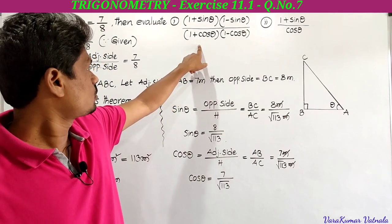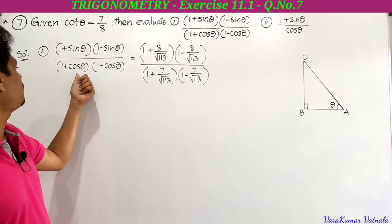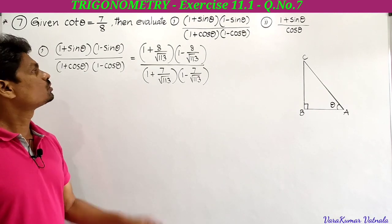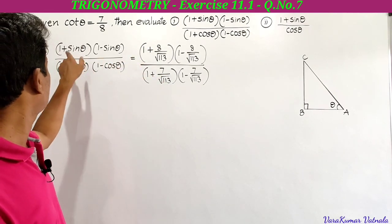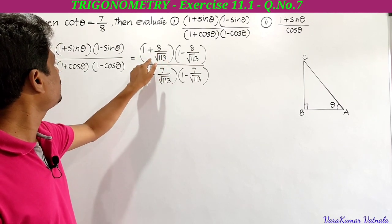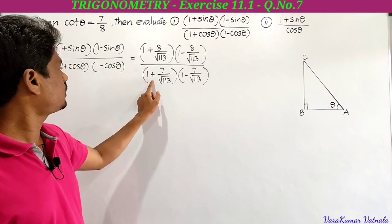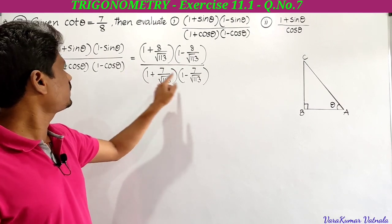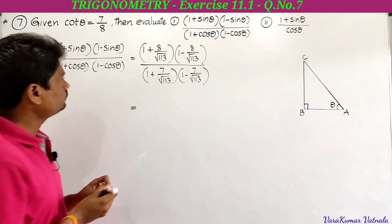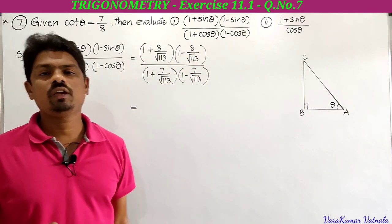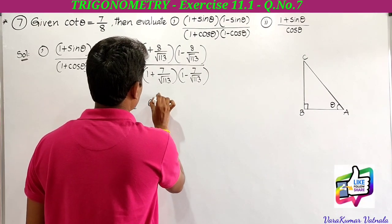Now substitute into the first expression. 1 plus sin theta into 1 minus sin theta divided by 1 plus cos theta into 1 minus cos theta. This is in the form (a plus b)(a minus b) equals a square minus b square. So numerator becomes 1 minus (8 by root 113) squared, denominator becomes 1 minus (7 by root 113) squared.